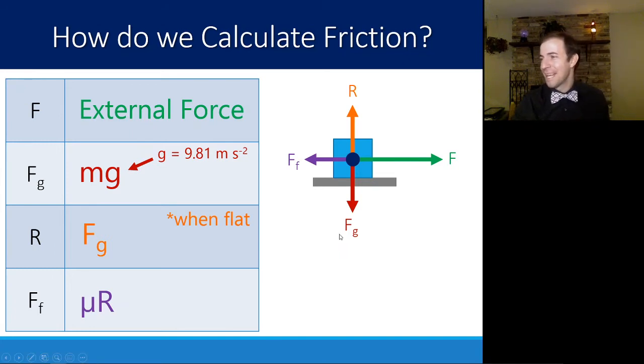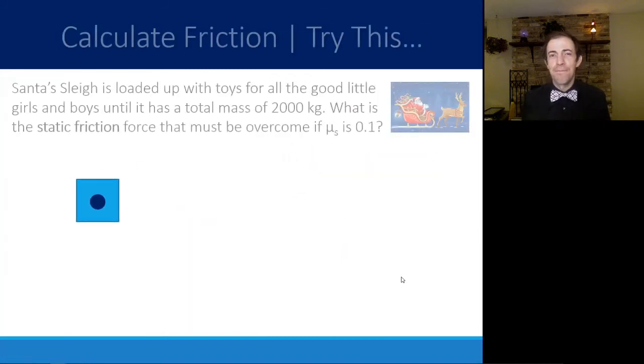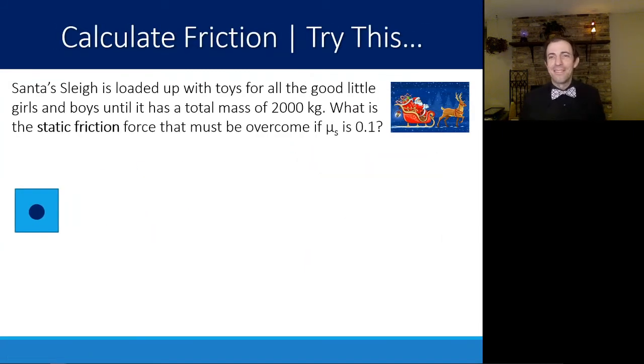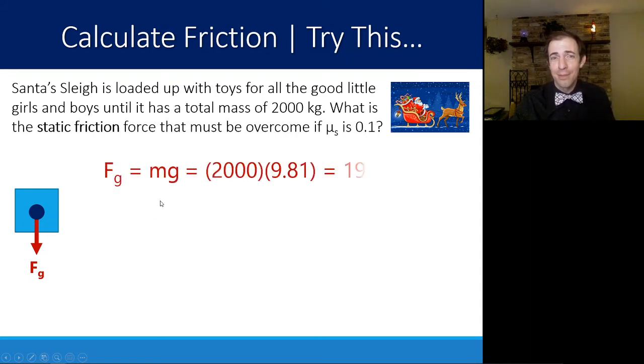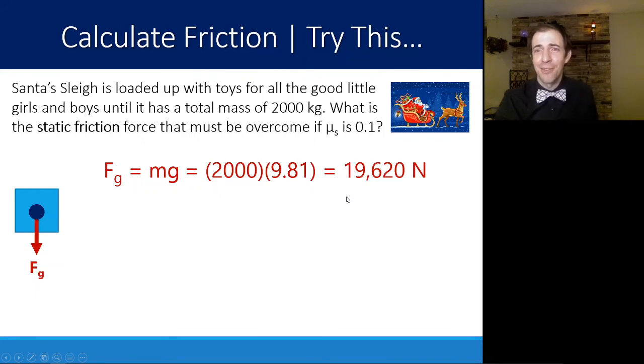Let's look at an example. Let's say that we have Santa's sleigh that's loaded up with toys for all the good little girls and boys until it has a mass of 2,000 kilograms. What is the static friction force that must be overcome to make this happen? If it has a mass of 2,000 kilograms, we know it has a weight. We can find that weight, mass times gravity, is 2,000 times 9.81 or 19,620 newtons.